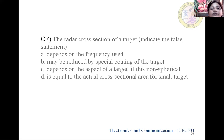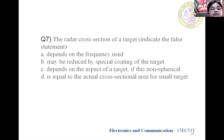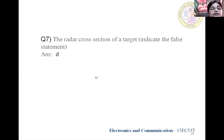Question 7: The radar cross-section of a target — indicate the false statement — A) depends on the frequency used, B) may be reduced by special coating of the target, C) depends on the aspect of the target if non-spherical, or D) is equal to the actual cross-sectional area for all targets. The right answer is D — it is not always equal to the actual cross-sectional area. Question 8: A high radar cross-section (RCS) width — A) makes the return signal easier to distinguish from noise, B) makes target tracking easier, C) increases the maximum range, or D) has no effect on resolution. The right answer is C — a high RCS increases the maximum range.